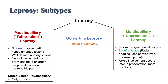The third subtype is borderline leprosy — essentially a mixed presentation of paucibacillary and multibacillary. You might have around five lesions that are somewhat hyperpigmented, not quite fitting paucibacillary or multibacillary, so we call it borderline leprosy.